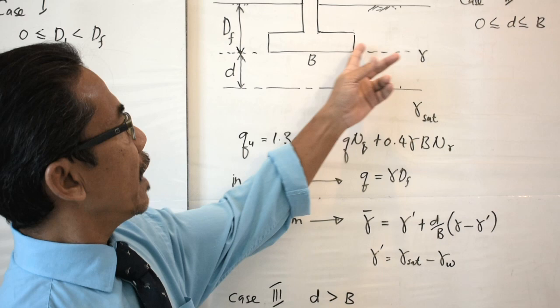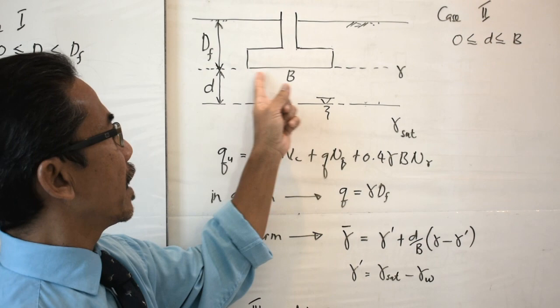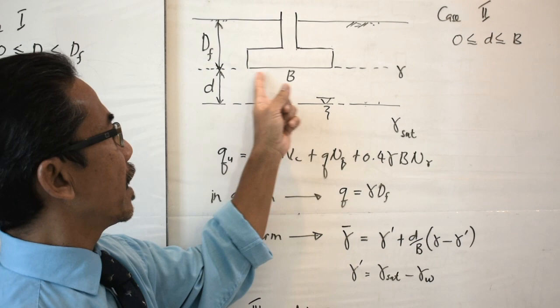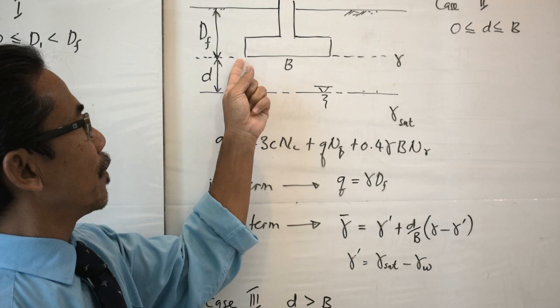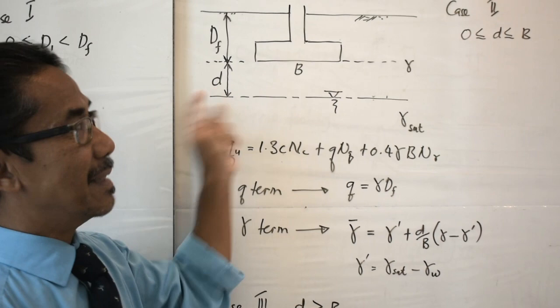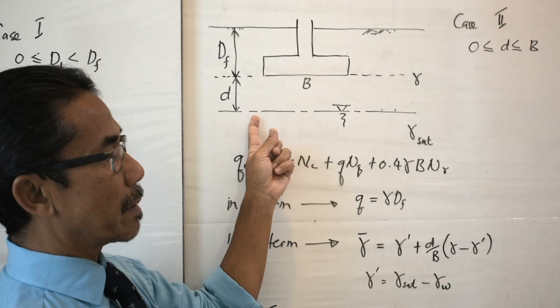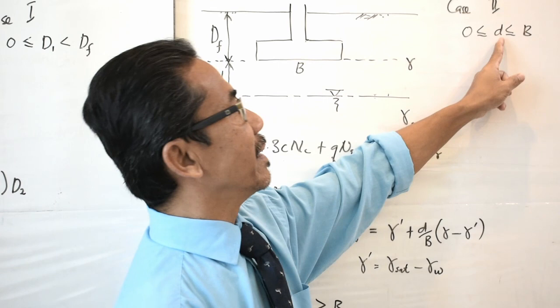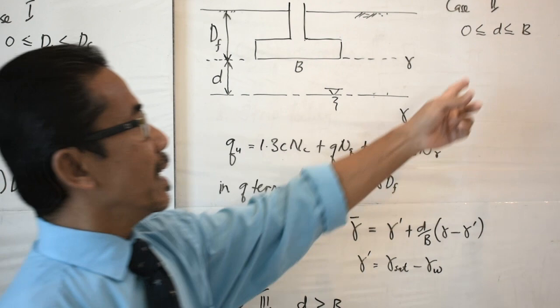Now let's move on to case number 2. We have a footing with depth df and width B, but now the groundwater table is located below the base of the footing. The distance from the base of the footing to the surface of the groundwater table is indicated as small d. Case 2 applies when small d is greater than or equal to 0 and d is less than or equal to B.